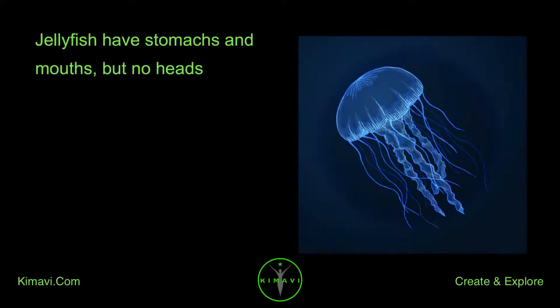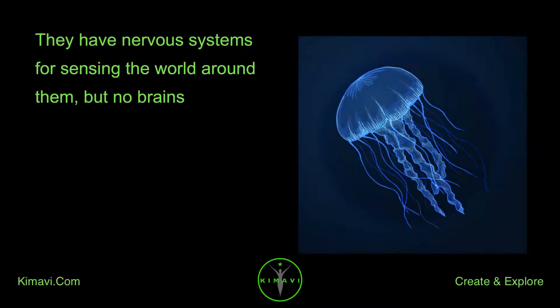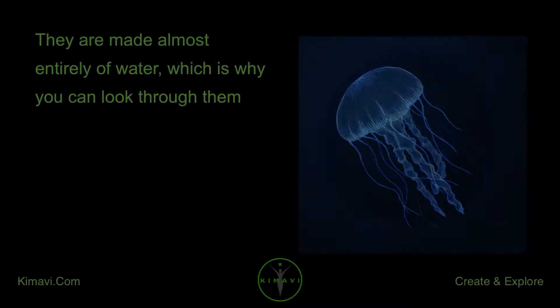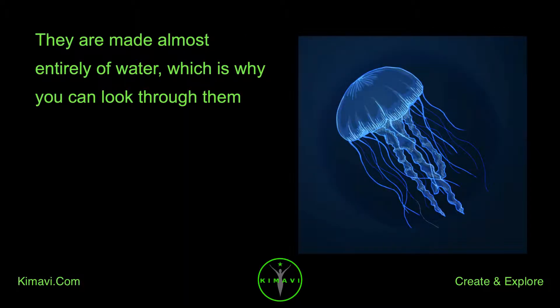Jellyfish have stomachs and mouths, but no heads. They have nervous systems for sensing the world around them, but no brains. They are made almost entirely of water, which is why you can look through them.